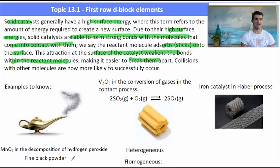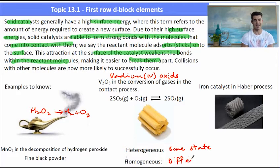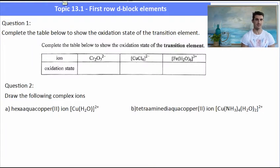So the transition metals act as catalysts. A couple that the IB would like you to know is the decomposition of hydrogen peroxide to water and oxygen gas. That is the use of manganese dioxide, MnO2 which is a black fine powder. Vanadium(V) oxide is used in the conversion of gases in the contact process. The contact process is used to make sulfuric acid and iron is the catalyst in the Haber process. A homogeneous catalyst is a catalyst that is in the same state as the reactants and products. A heterogeneous is in a different state.